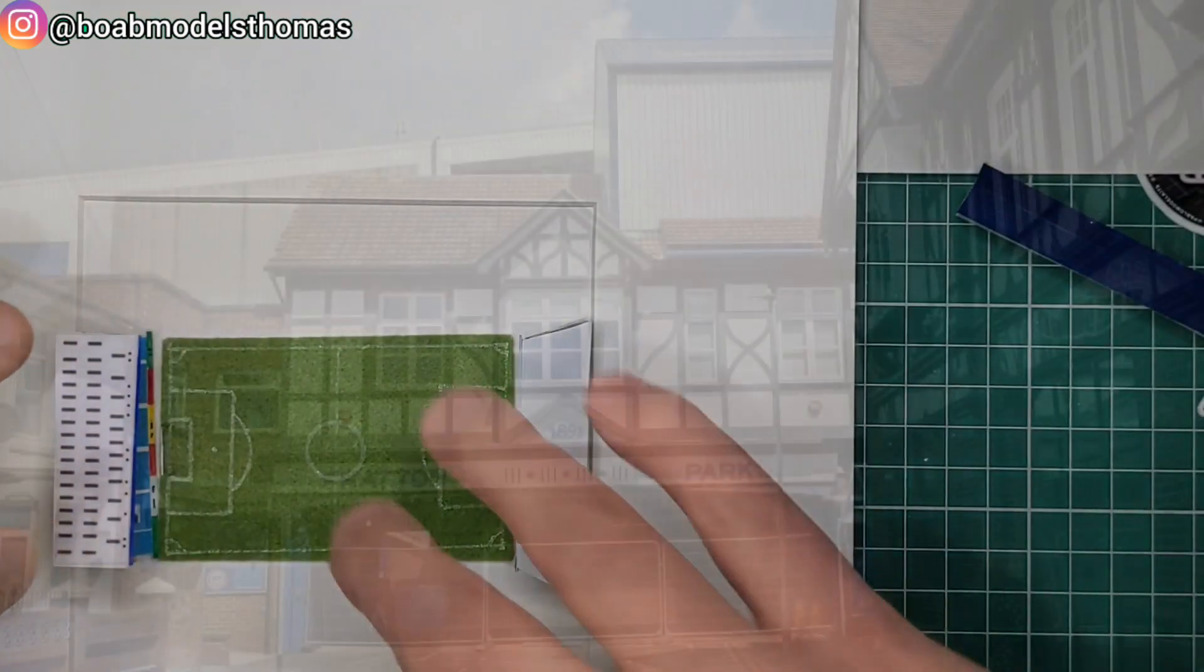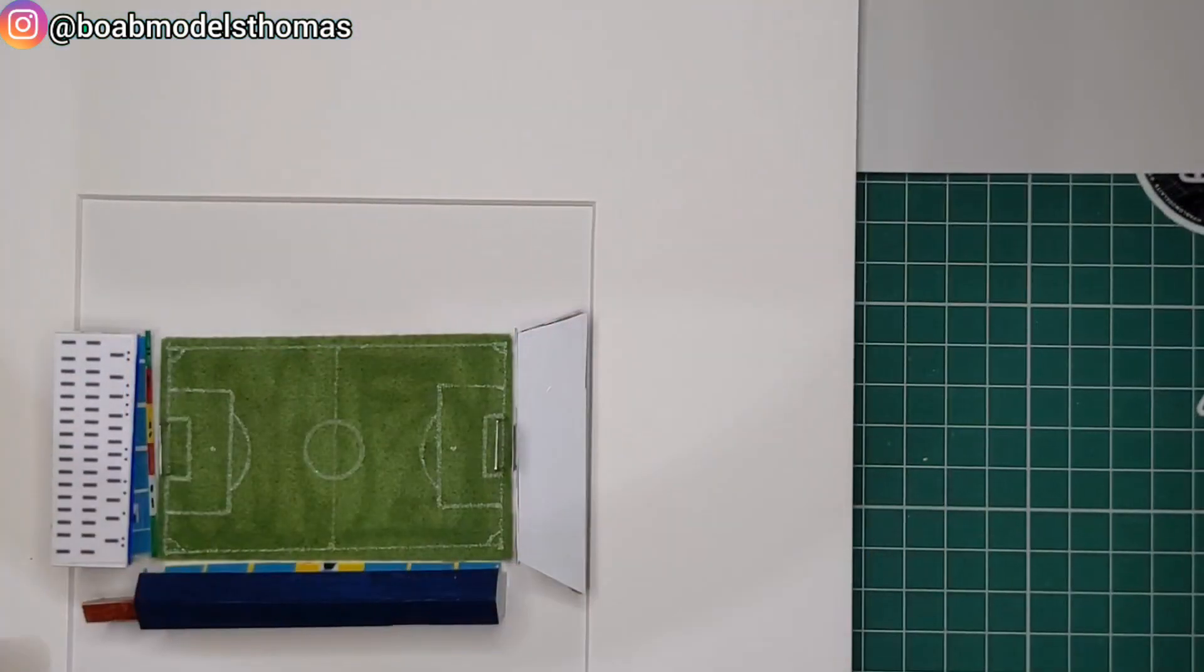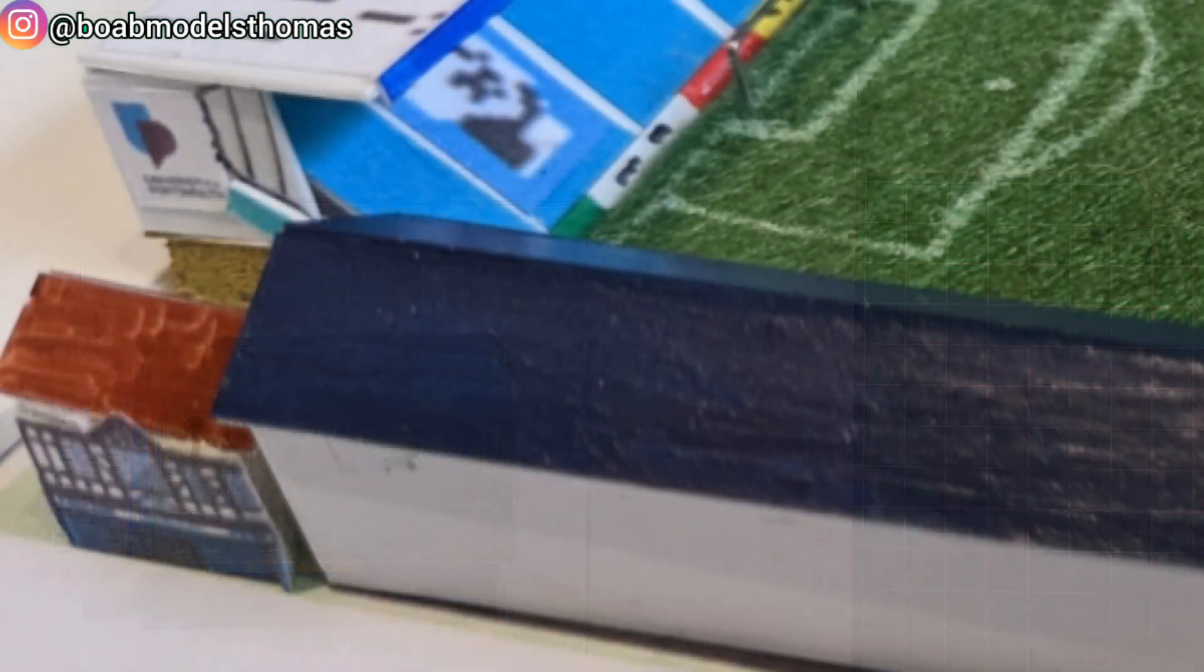Fratton Park has a mock Tudor entrance at the corner of the South and Fratton ends, which I recreated using a little bit of foam card, and printed off an image of the front to put on top of it.